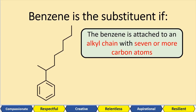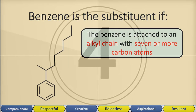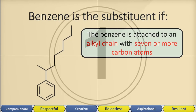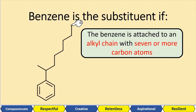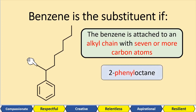You do this yourself — pause the video and see if you can name this. Let's count this carbon chain: one, two, three, four, five, six, seven, eight — so it's an octane. And the phenyl is attached to position two — remember we use the lowest position, so we're not using position seven. So we've got 2-phenyloctane.